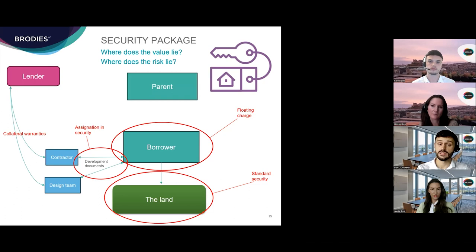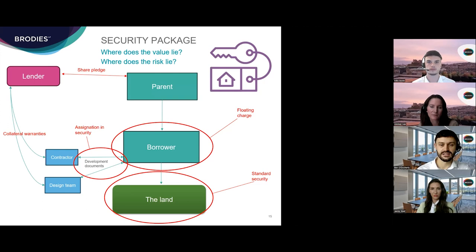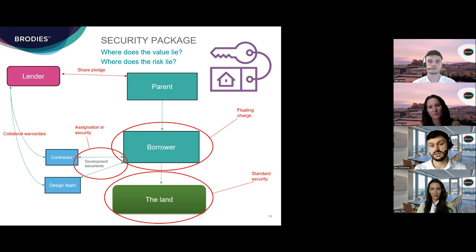Upon attachment, the floating charge has effect as if it were a fixed security over the property to which it has attached. If there's an event of default, the lender can normally proceed to appoint administrators under the floating charge and in certain limited circumstances may be able to appoint receivers — both appointments can be made relatively quickly, allowing the lender to appoint an insolvency practitioner to take control of the company's assets. This makes the floating charge a key part of a lender's security package.